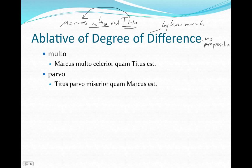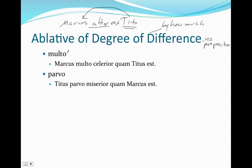Now there are two common words that are used with this. One is molto, that is, somebody can be much taller. In the case of this example, Marcus molto celerior quam Titus est - Marcus is much faster than Titus. So molto here is the ablative of degree of difference, telling us how much faster. He's much faster.